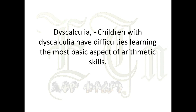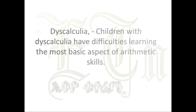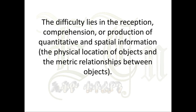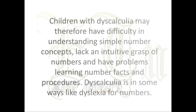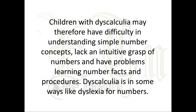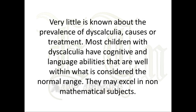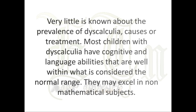Dyscalculia: children with dyscalculia have difficulties learning the most basic aspects of arithmetic skills. The difficulty lies in the reception, comprehension or production of quantitative and spatial information — the physical location of objects and the metric relationships between objects. Children with dyscalculia may have difficulty understanding simple number concepts, lack an intuitive grasp of numbers, and have problems learning number facts and procedures. Dyscalculia is in some ways like dyslexia for numbers. Very little is known about its prevalence, causes or treatment. Most children with dyscalculia have cognitive and language abilities well within the normal range, and they may excel in non-mathematical subjects.